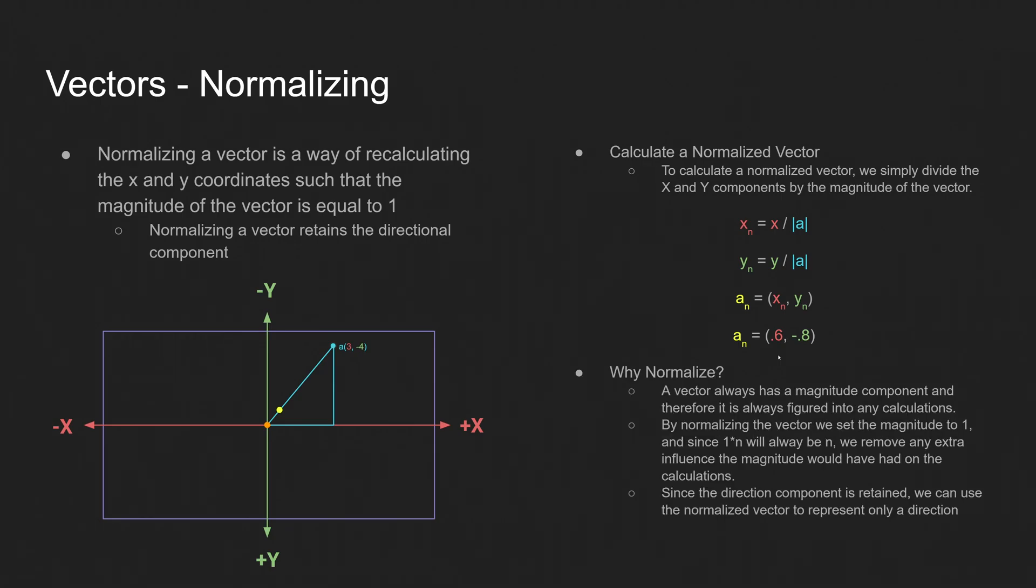So why would we normalize a vector? A vector always has a magnitude component, and therefore, it's always figured into any calculations. By normalizing the vector, we set the magnitude to 1. And since 1 times n will always just be n, we remove any extra influence the magnitude would have had on those calculations. Since the direction component is retained, we can use the normalized vector to represent just the direction.